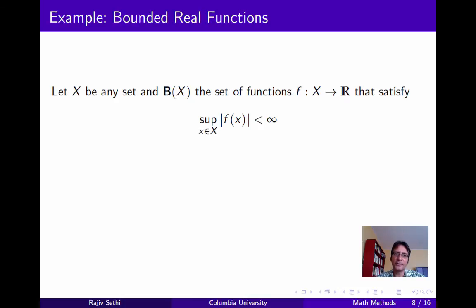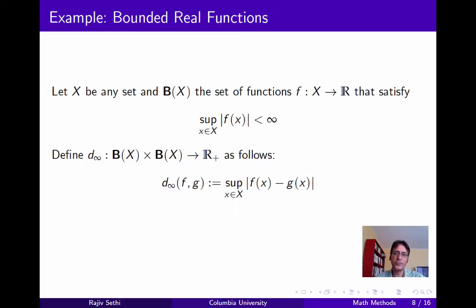Now consider the set of bounded real functions. Let x be any set, and let B(x) be the set of functions where the codomain is the set of real numbers. We'll consider bounded real functions, so the image of x under the function should be a bounded set of real numbers. By the completeness axiom, we know that this set must have a supremum. We can define a metric d-infinity or the sup metric for the set of bounded real functions as follows: the distance between two functions f and g is just the supremum of the point-wise distances between f(x) and g(x) as x varies across the domain.